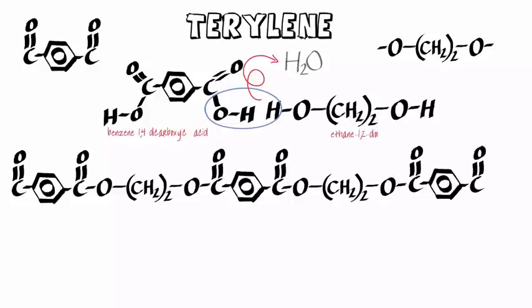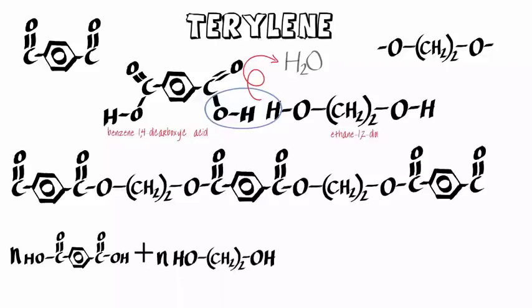We can show this in an abbreviated form as follows. What we do is take N of the dicarboxylic acid molecules, where N is a large integer such as 2000. We react those with the same number of diol molecules.